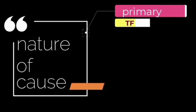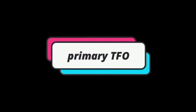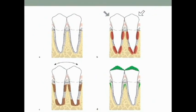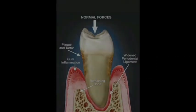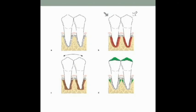Next, depending on the nature of cause, TFO can be divided into primary TFO and secondary TFO. Primary TFO occurs due to excessive occlusal forces on the normal periodontium — here you could see normal bone and normal gingiva, but there are excessive occlusal forces, that's why TFO occurs. Secondary TFO is when there is marginal periodontitis and bone loss, and there are only normal occlusal forces — the periodontium could not sustain or withstand these normal occlusal forces, so that is called secondary TFO.